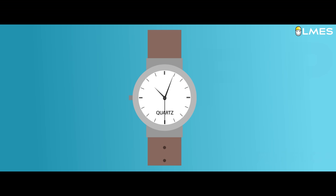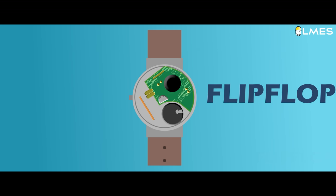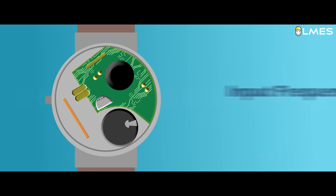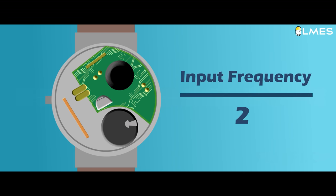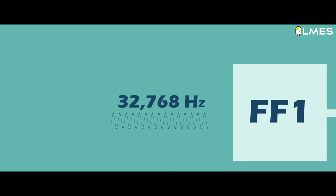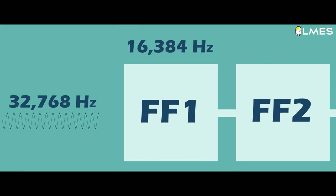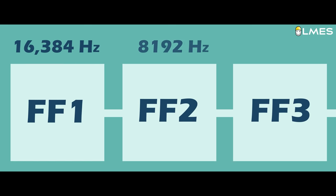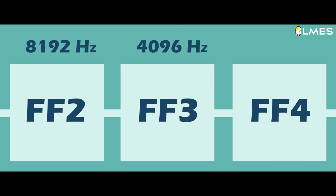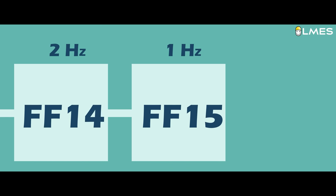That's why this frequency will go to the flip-flop circuit in the watch. If you do the flip-flop circuit, the input frequency will be correct. In this watch, you can add 15 flip-flop circuits. The frequency of the crystal is 32,768 Hz. If you do the flip-flop: 16,384 Hz, 8,192 Hz, 4,096 Hz — down to 1 Hz.